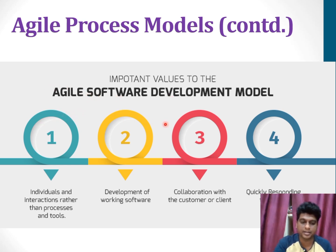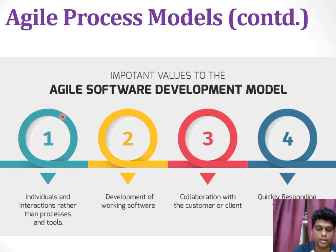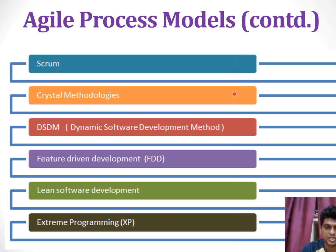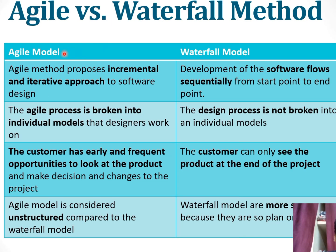In the agile software development model, each iteration involves a team working through a full software development life cycle that includes planning, requirement analysis, design, coding, and testing. In the first stage, individuals and interactions happen, then software is developed collaborating with client needs, and valuable comments are obtained from the customer. Key features of this method include modularity, abstraction, encapsulation, reusability, maintenance, testing, and design patterns. Agile methodologies include Scrum, Crystal, Dynamic Software Development Method, Feature-Driven Development, Lean Software Development, and Extreme Programming.